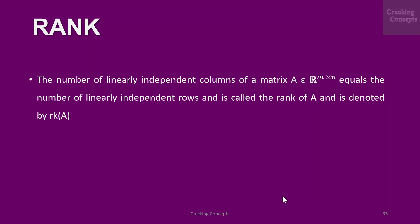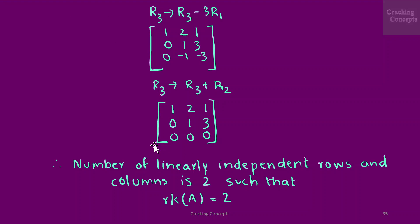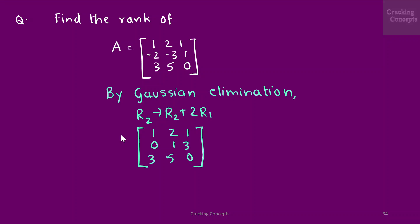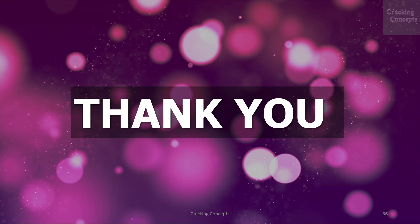Now we will see what rank is. The number of linearly independent columns of a matrix A equals the number of linearly independent rows and is called the rank of A, denoted rk(A). We find the rank of a given matrix A by applying Gaussian elimination: the second row is added to twice the first row giving 0; then the third row is subtracted from three times the first row giving 0; then the second and third rows are added, yielding the final matrix. We see that the number of linearly independent rows and columns is 2, such that rk(A) = 2. That's all for now, thank you for watching.